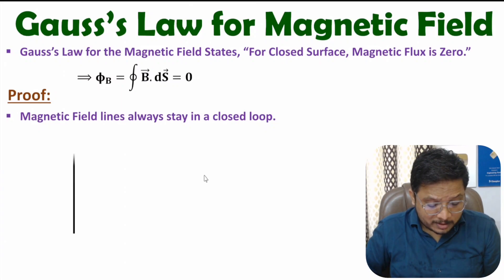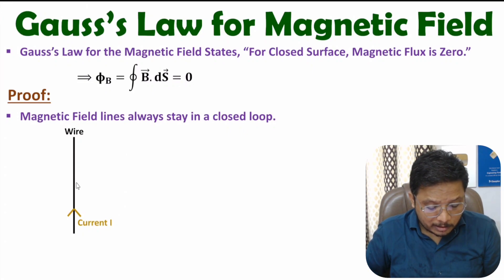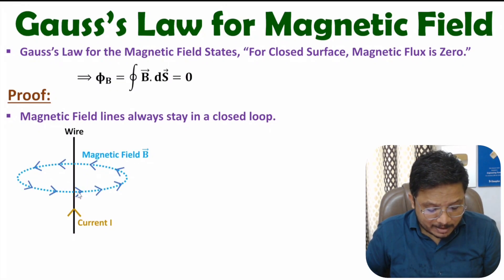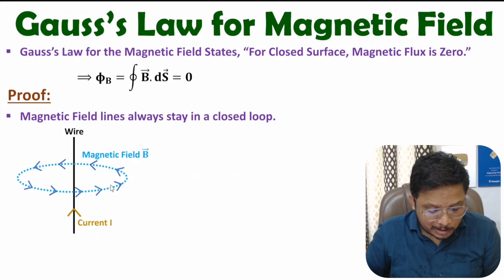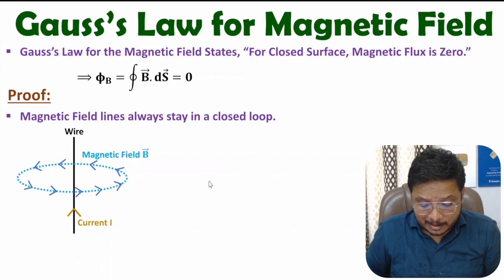If you have one straight wire and current is passing through the wire like this, then as per the right-hand thumb rule, there will be formation of magnetic field lines. These magnetic field lines will be in this direction as per the right-hand thumb rule, and you can observe they are in a closed loop.